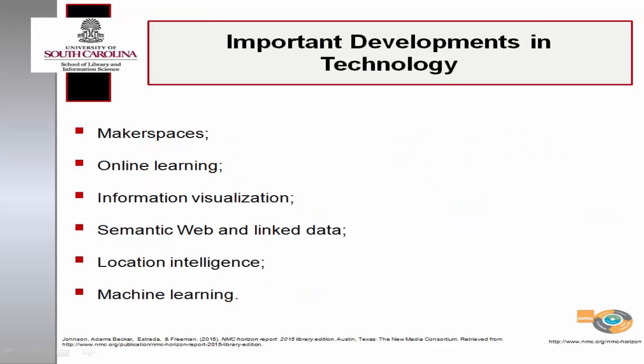The Horizon Project Library panel highlighted six technologies they agreed have the potential to foster real changes in research, information management, content delivery, and learning. The six technologies were makerspaces, online learning, information visualization, semantic web and linked data, location intelligence, and machine learning.